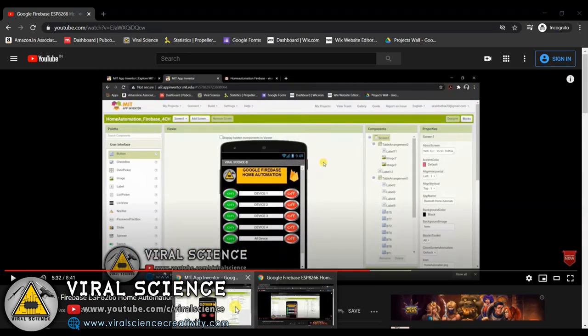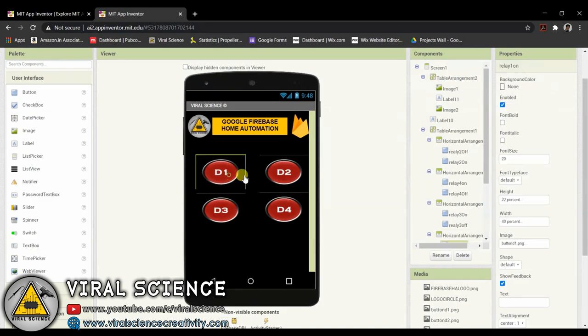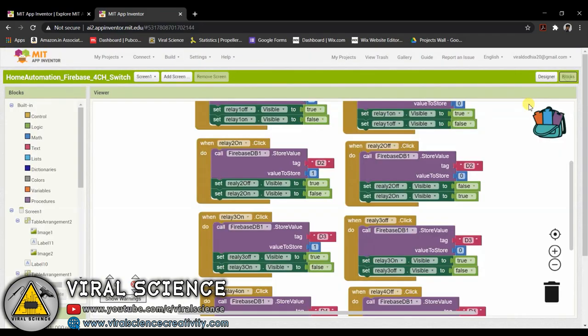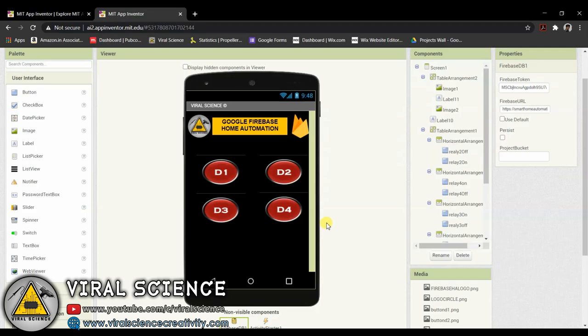I have just made some changes in the design of our application. You can get the AI file of this MIT App Inventor from my website, that is www.vitalsciencecreativity.com. Link is in the description down below. And all the other details of this project are available on that page, so you can visit it.